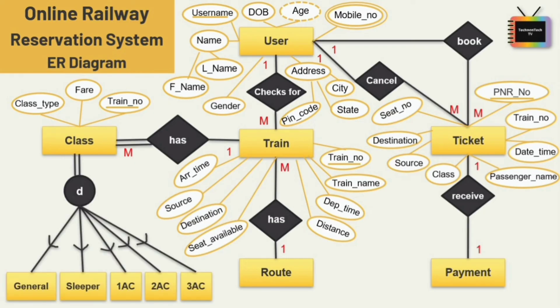For the class entity I am adding specialization. In specialization, one higher-level entity can be broken down into two or more lower-level entities. If you don't know about specialization and generalization, I have added the video link in the upper right corner. The class entity can be specialized as general, sleeper, 1AC, 2AC, 3AC, and so on. We can also add specialization for the user entity, breaking it into admin and customer.